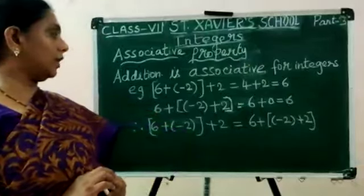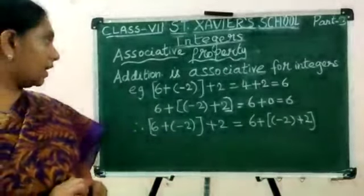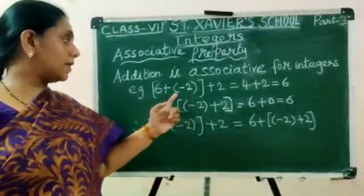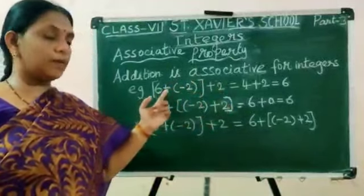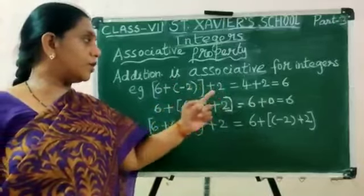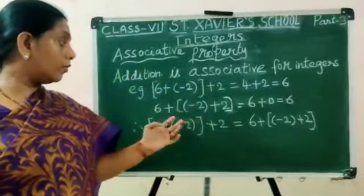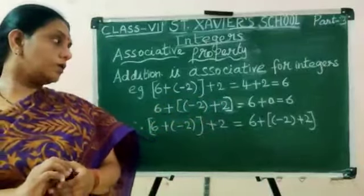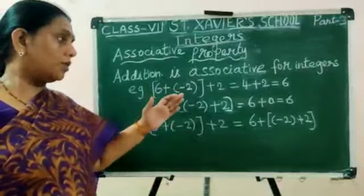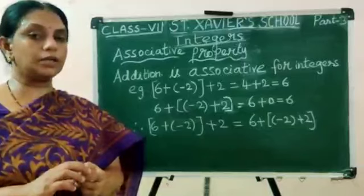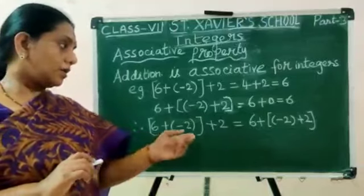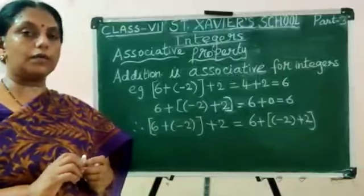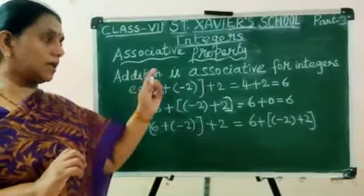Associative property for integers — addition. Addition is associative for integers. Example: (6 + (−2)) + 2 = 6 + (−2 + 2). Left side: 6 minus 2 is 4, and 4 plus 2 equals 6. The other way: minus 2 and plus 2 become 0, so 6 plus 0 equals 6. In any way you group the integers, you get the same sum. Therefore, addition is associative for integers.